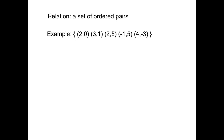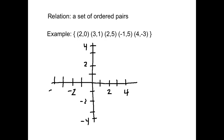Looking at a list of points usually isn't that helpful, so I'm going to graph them just to see what's going on. Here's: (2, 0), (3, 1), (2, 5), (-1, 5), and (4, -3). So there are your points.